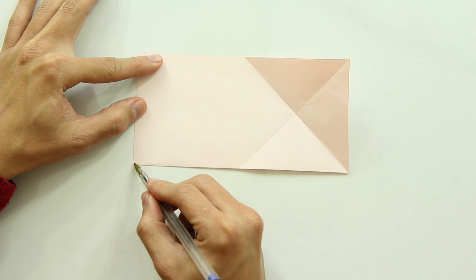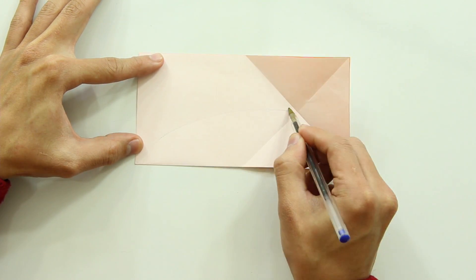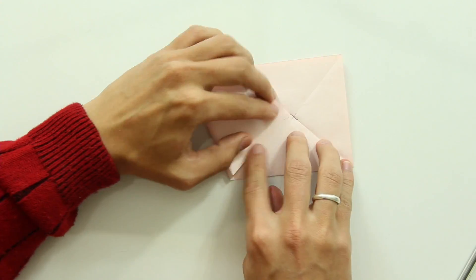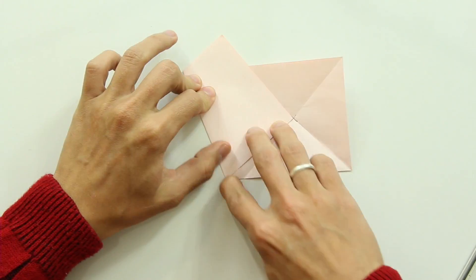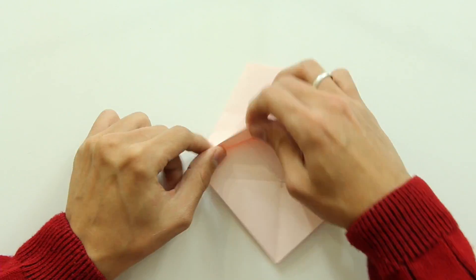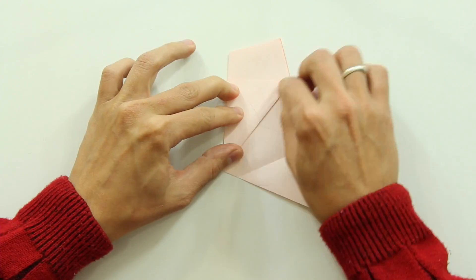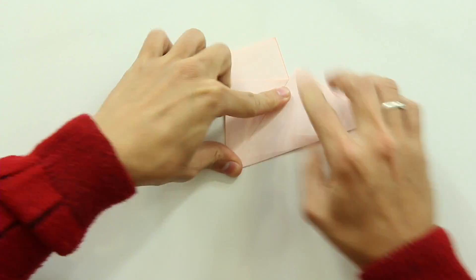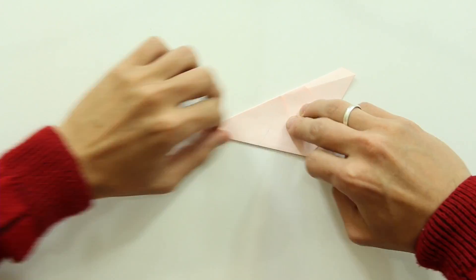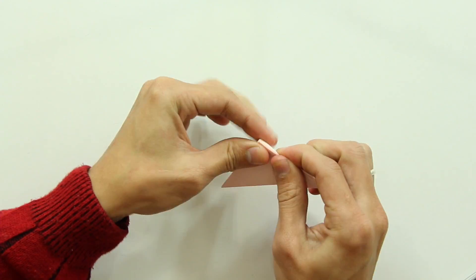Now fold the side of the paper, making this point go up to this point here. Now fold the top layer in half, and the bottom part fold up to this point, and fold everything in half again, and make a fold along this line here.